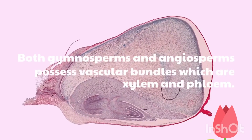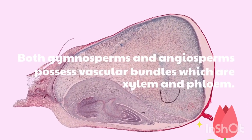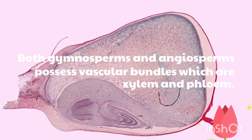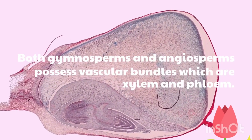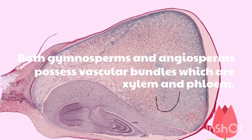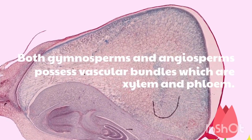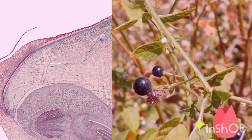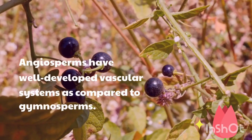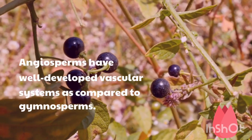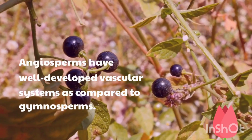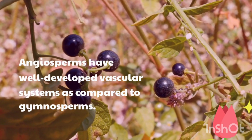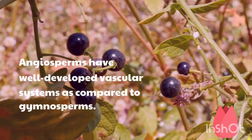Both gymnosperms and angiosperms possess vascular bundles, which are xylem and phloem. Angiosperms have well-developed vascular systems as compared to gymnosperms.